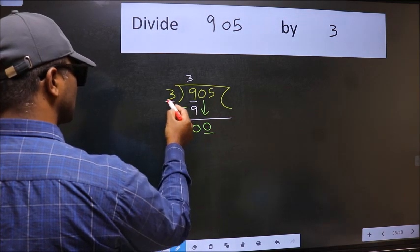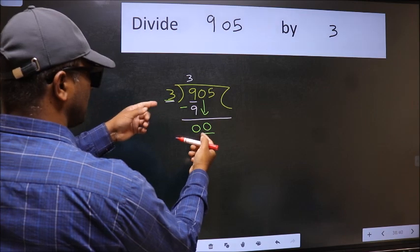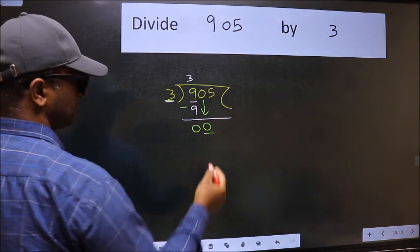Now here we have 0 and here 3. 0 is smaller than 3. So we should bring down the second number.